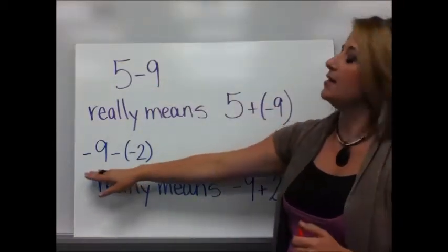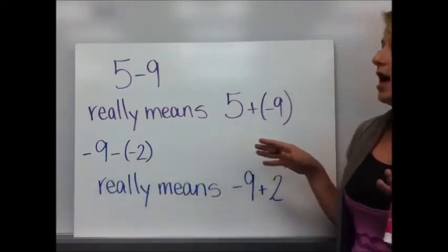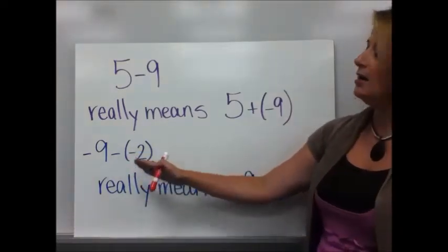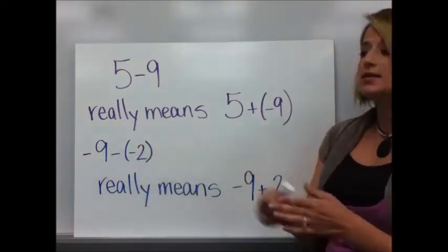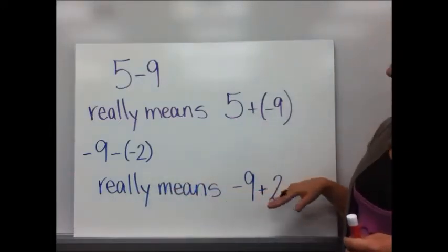Something that looks crazy like this, negative 9 minus negative 2. Well, I'm going to add its opposite. So instead of subtracting, I'm adding it. The opposite of negative 2 is a positive 2. So what that really means is negative 9 plus 2.